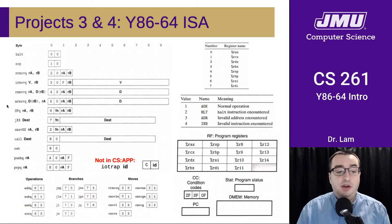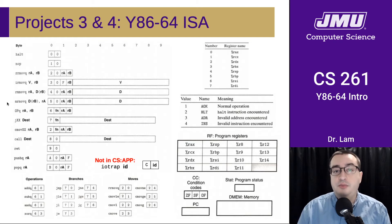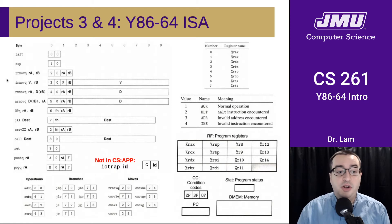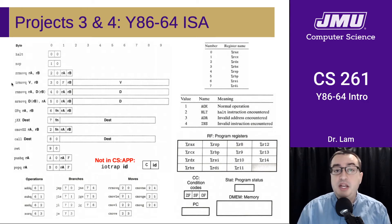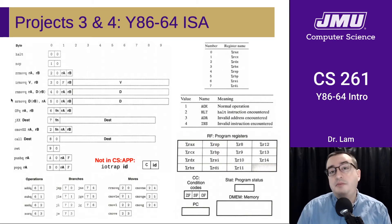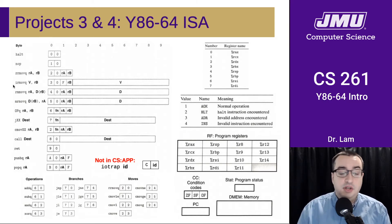The point here is that we have different addressing modes, and those different addressing modes are actually different instructions. Unlike with move in x86, we have different kinds of instructions for different kinds of moves. For instance, this is a register-to-register move, this is an immediate-to-register move, this is a register-to-memory move, and this is a memory-to-register move. They're named according to what they do: rrmovq, irmovq, and so forth.